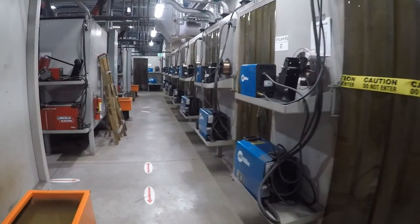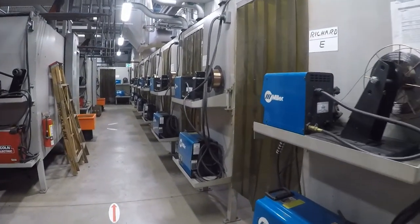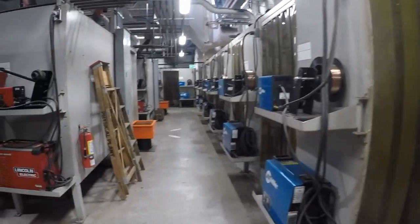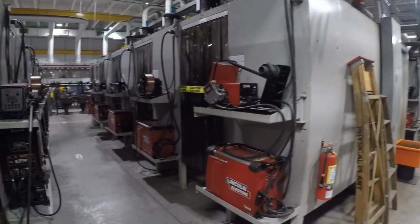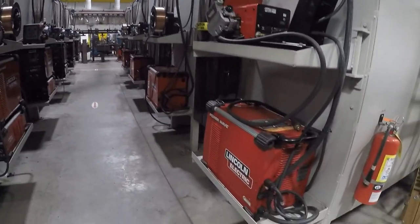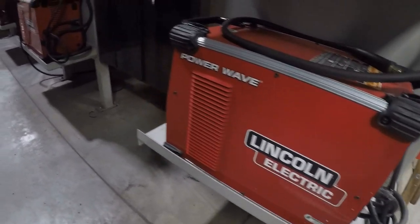We can see the Millers over here. Like I said we got about, we do have 20 of these, and then we have the Lincolns over here. These ones here do not have the advanced module on this side, but the ones over here on this side do.